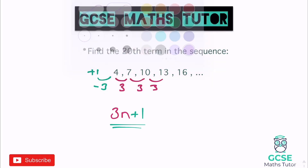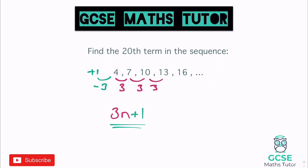To find the 20th term, we just substitute 20 into the expression. So n becomes 20: three lots of 20, plus one. Three times 20 is 60, and adding one gives us 61. That's how we find terms in a sequence quickly — find the nth term, substitute the position number in, and write down the answer.